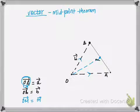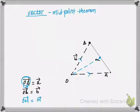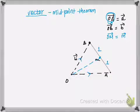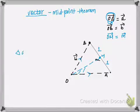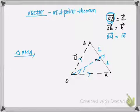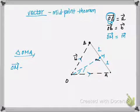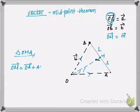Since point M lies on line segment AB and divides it into two halves, the ratio in which M divides AB is equal — that is, 1:1. Now I'm going to take triangle OMA. We can see clearly that in triangle OMA, vector OM is equal to vector OA plus vector AM, according to the triangle law of vector addition.